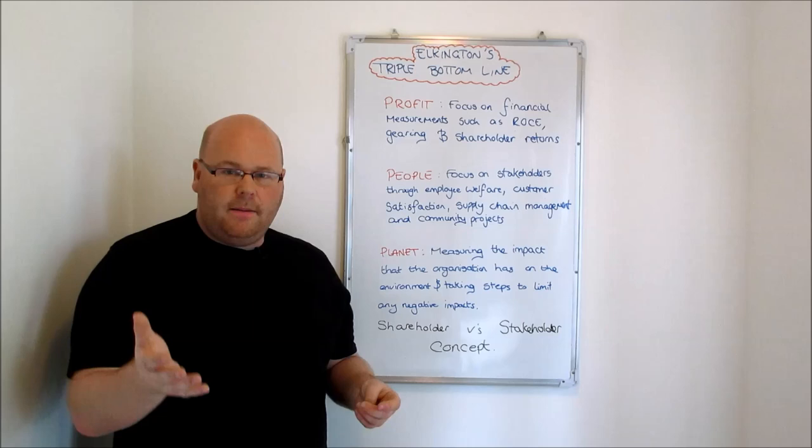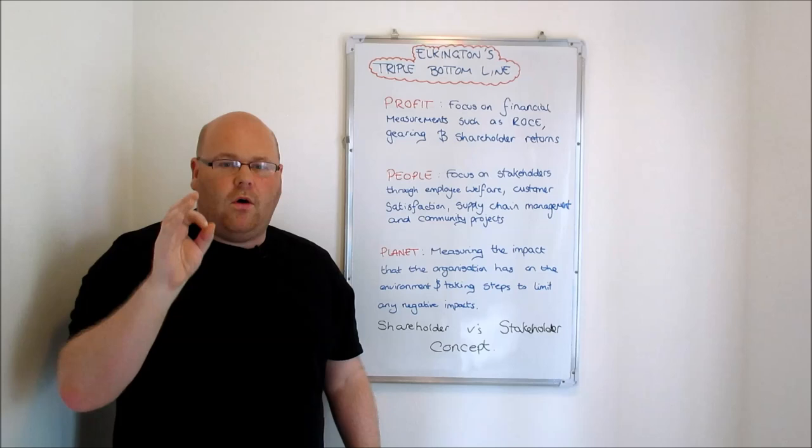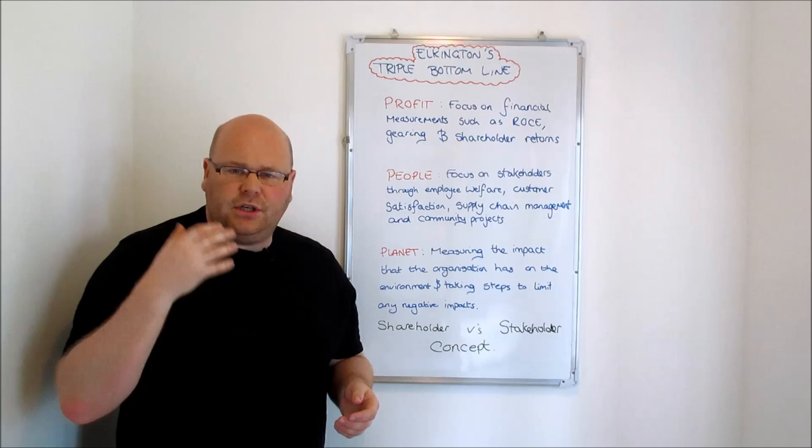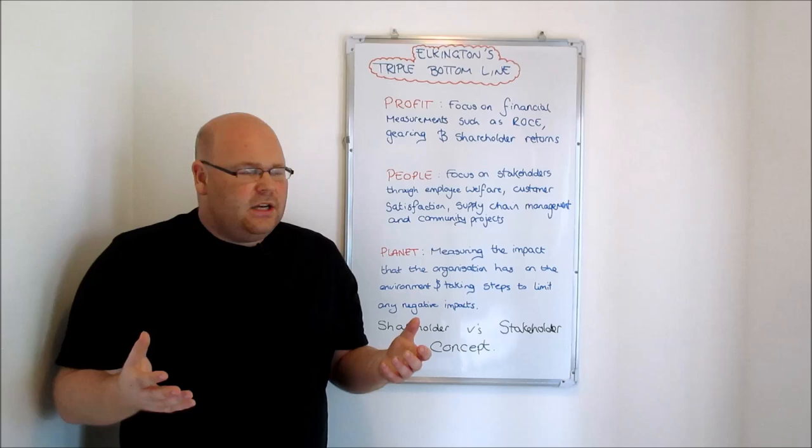Elkington also proposed that businesses have this moral obligation to think about the local communities where they're active and think about community support projects that they might be able to implement, and thinking about how businesses might harm the local communities and trying to minimize any negative impacts on local communities as part of their strategies. Now where Elkington does take a little bit of a different direction to Kaplan and Norton and their Balanced Scorecard, he's then thinking about his third P, which was planet and environmental responsibility.